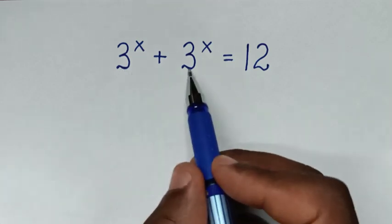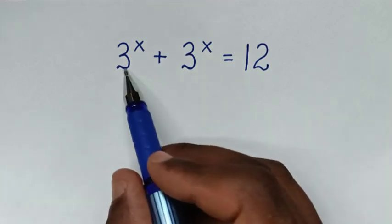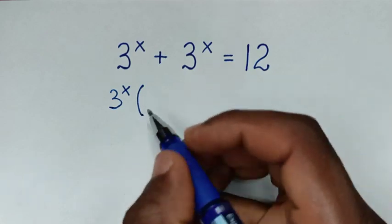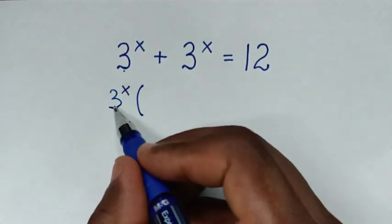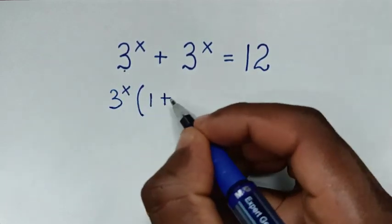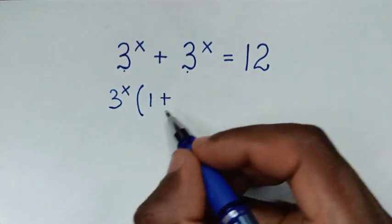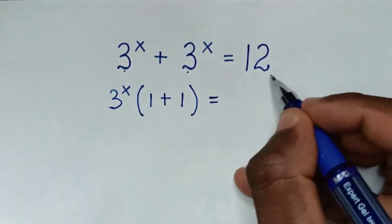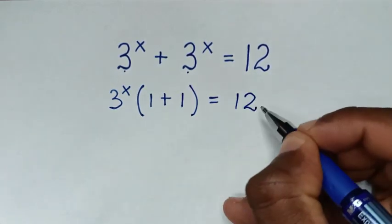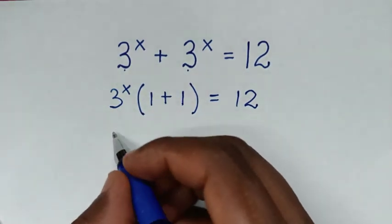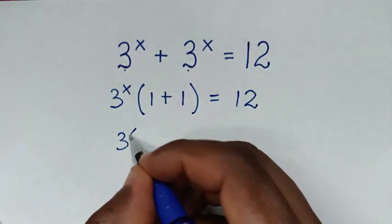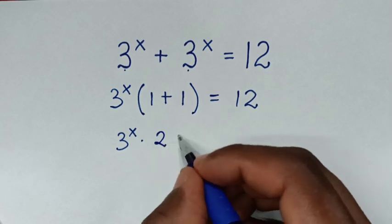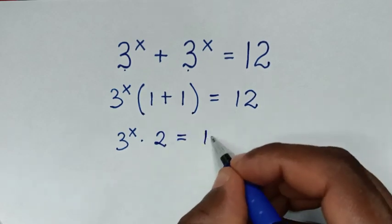From here, in the left side, 3 power x is common, so we'll take 3 power x out of the bracket. Then 3 power x divided by 3 power x is 1, plus 3 power x divided by 3 power x is 1, in bracket, is equal to 12. Then it will be 3 power x times 1 plus 1, which is 2, is equal to 12.